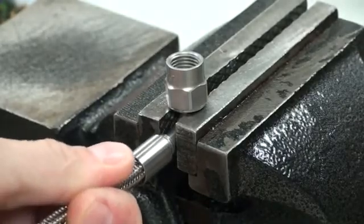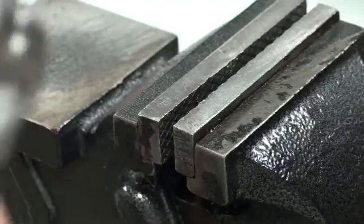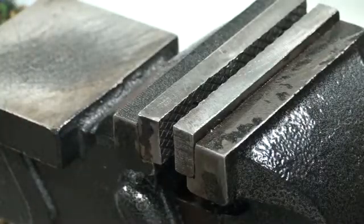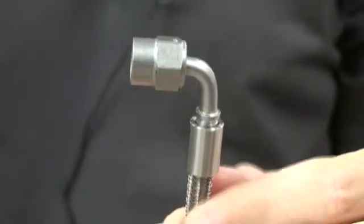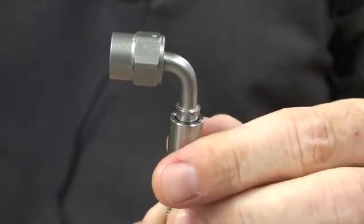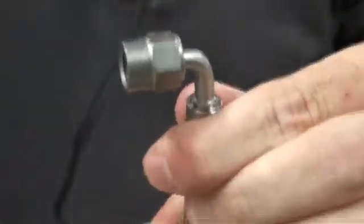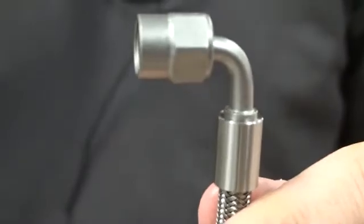Push the hose on until the Teflon bottoms against the shoulder on the fitting. When the fitting is inserted, the collar will be still up against the braid of the hose. Just pull the collar up so it's flush with the bottom of the fitting before you crimp it.